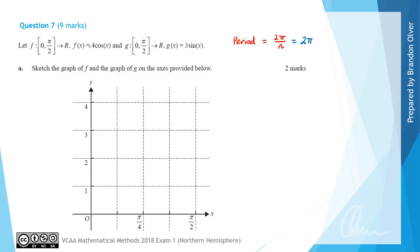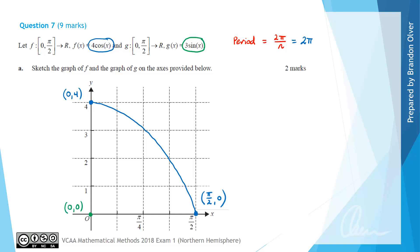Next up we are going to graph these. f(x) = 4cos(x) we are going to put in blue. Cosine starts at the point (0, 4) and it will end at an x-intercept at π/2. We connect those with a smooth continuous curve. Next up we sketch g(x) = 3sin(x). It is going to start with an x-intercept at (0, 0) and finish at its highest point, the amplitude, at (π/2, 3). We connect those with a smooth continuous curve. That is the answer for part A.